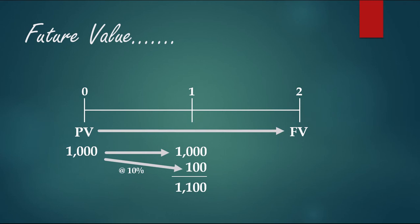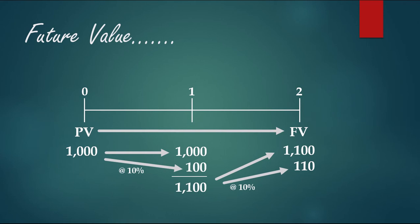Since the person wants the future value after two years, we go one more year. The bank now charges 10% profit on the amount of 1100 instead of 1000, because after one year the person has 1100 in his account. After adding the second year's profit of 110, the person will have 1210 in his account.